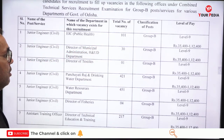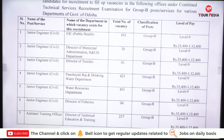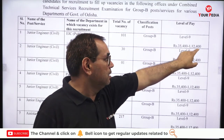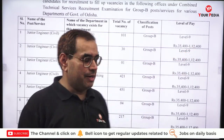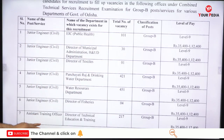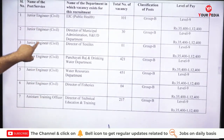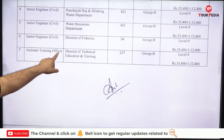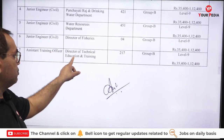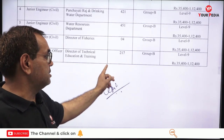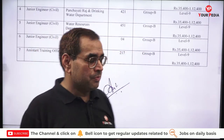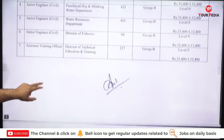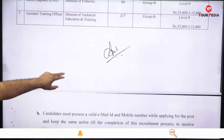Coming to the vacancies — for Junior Engineer Civil, the level of pay in Group B is Level 9, with a pay band of ₹35,400 to ₹1,12,400. You can check other branches similarly. Notably, there are 217 vacancies for Assistant Training Officer under the Directorate of Technical Education and Training in Group B — this is an important post with a large number of vacancies.